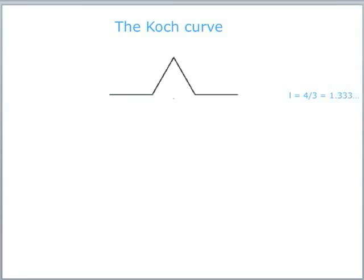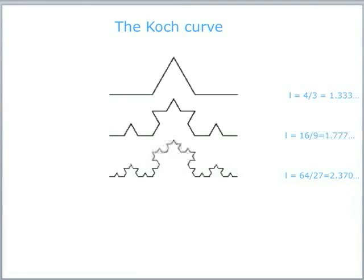Do it again. Each straight line bit — chop out the middle third and put a triangle in there. There's the next iteration, and the length has now gone up to 16 ninths — it's got bigger. Do it again: each straight line segment, take out the middle third and replace it with a triangle. And you can see that you're getting something which is getting progressively more crinkly.